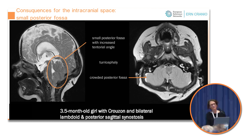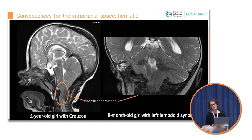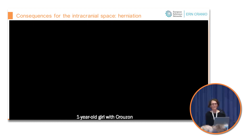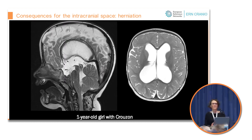In many of these patients you would see a herniation of the cerebellar tonsils, and again you can easily see that the brainstem is at risk for compression. The crowding of these structures in the posterior fossa can lead to an obstruction of the CSF outflow at the level of the foramen magnum.